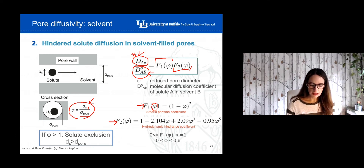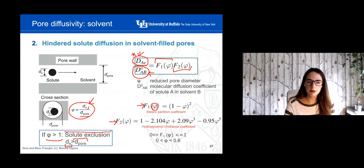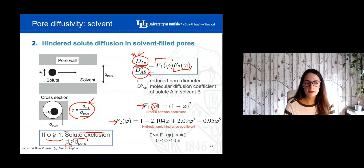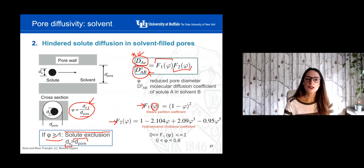Especially in the case of membranes, it is common to have the condition where the diameter of the particle is larger than the diameter of the pore. In this case, we say we are separating by exclusion. If the separation is done by exclusion, sigma is greater than or equal to 1. When sigma equals 1, that is the limiting case between exclusion and non-exclusion. An example will make this clearer.